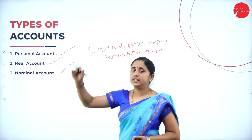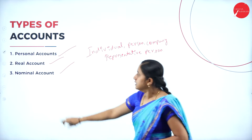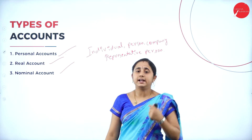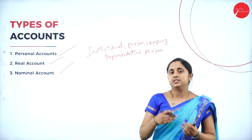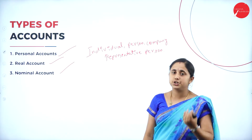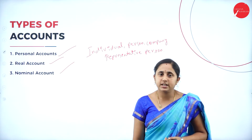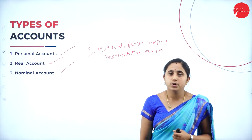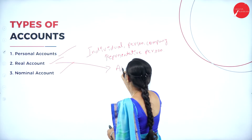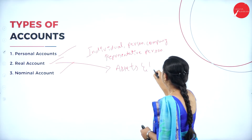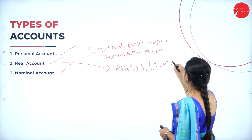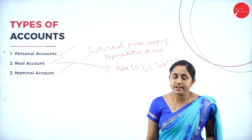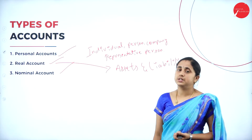Then real account. Real account means all the assets and liabilities — that is cash as well as tangible and intangible assets. So furniture, goods, machineries, plant and machinery, land and building — all assets are considered in real account. Real account includes all assets and liabilities: goodwill, land and building, plant and machinery, furniture. So if in a given transaction you find any assets, you will consider it as a real account.